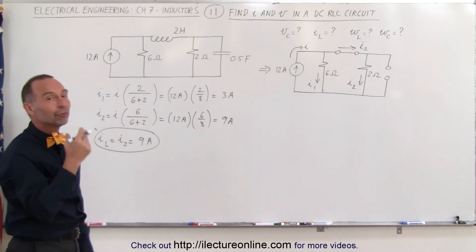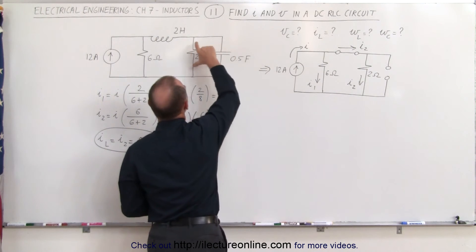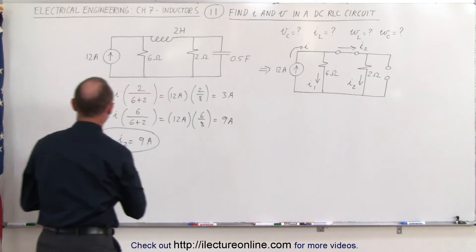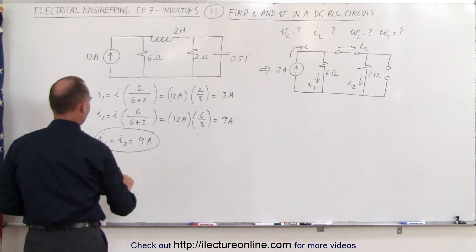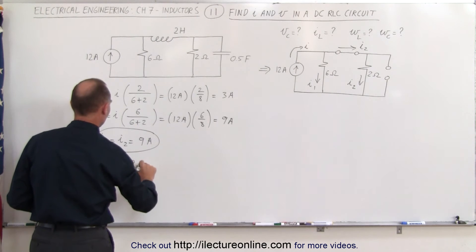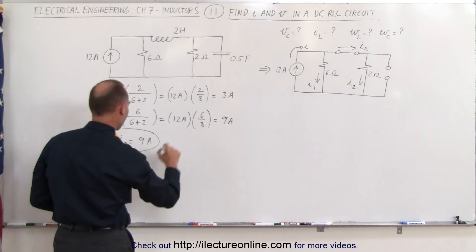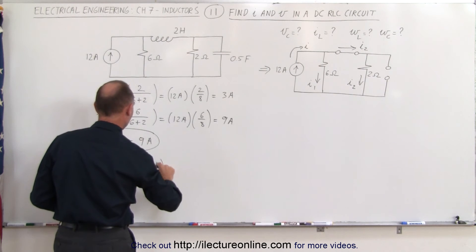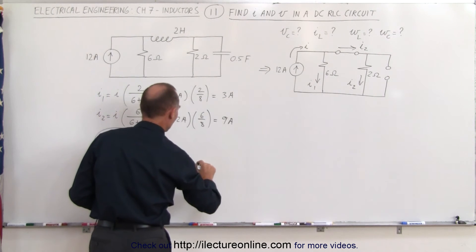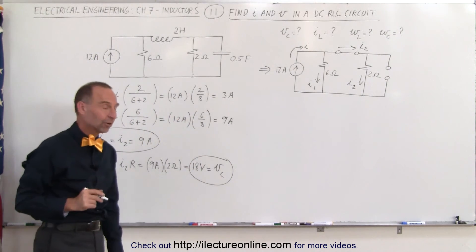Now we need to find the voltage across the capacitor. The voltage across the capacitor is the same as the voltage across the 2 ohm resistor branch. That voltage equals I sub 2 times the resistance — 9 amps times 2 ohms — which equals 18 volts. So the voltage across the capacitor is 18 volts.